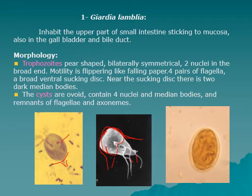The cysts are ovoid, containing four nuclei. They usually contain two trophozoites beside each other. We can see four nuclei, median bodies, and the remnants of flagella and axonemes. The nuclei may not be very apparent, but two nuclei are visible on each side.